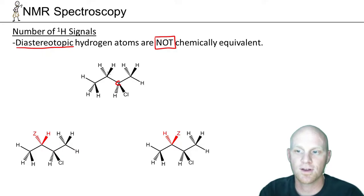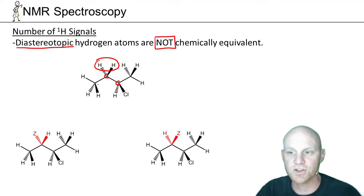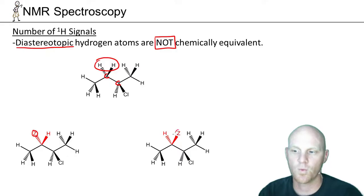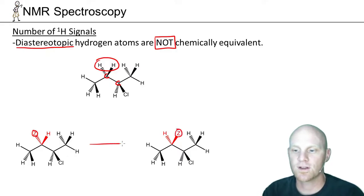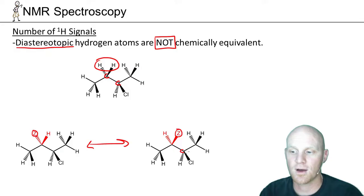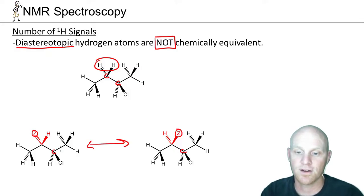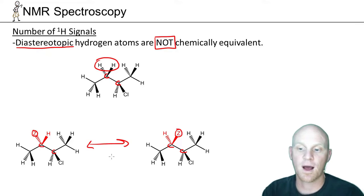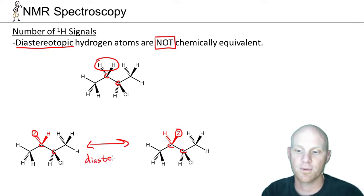If we take a look at these two H's on the CH2 — again we replace one with Z, here the dashed one, and over here the wedged one — then ask ourselves what is the relationship between these two compounds. These two compounds now have two chiral centers: one in the same configuration, and one in the opposite configuration, so we'd say that they're diastereomers.